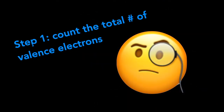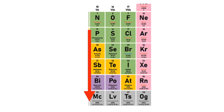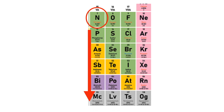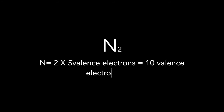Step one: count the total number of valence electrons. An easy way to count the total number of valence electrons is by looking at the periodic table. Underneath the group number is a Roman numeral followed by the letter A. We can see nitrogen has a Roman numeral of five in 5A, so that means that entire column has five valence electrons. Because we have two nitrogens, we need to write N equals two times five valence electrons, which equals ten valence electrons in total.